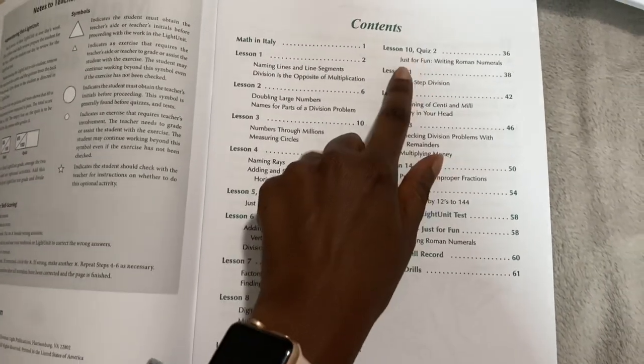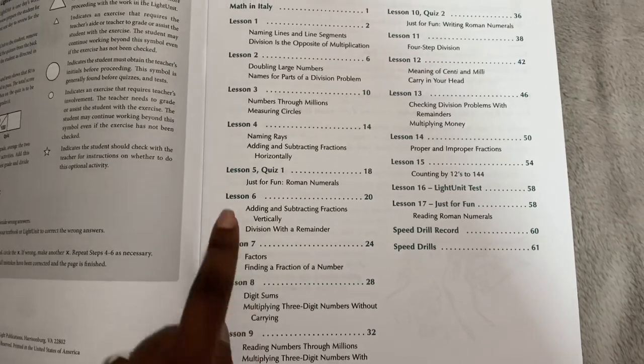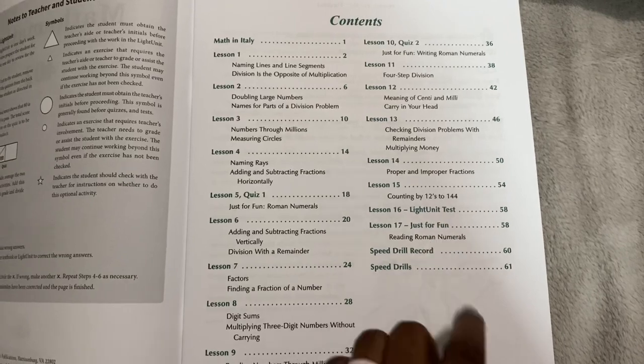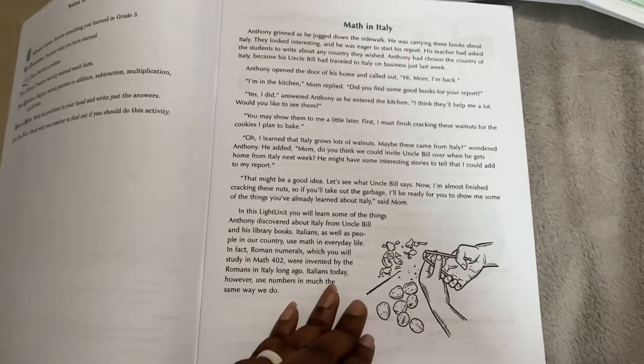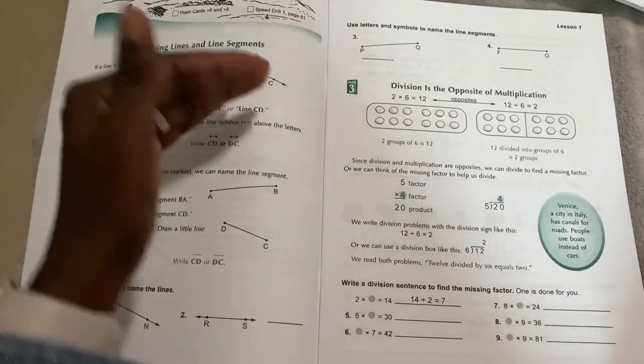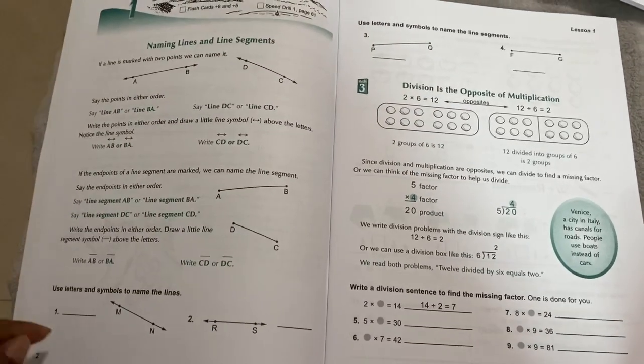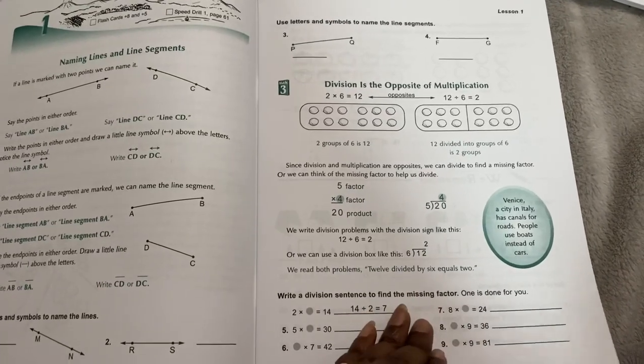So this is what they're going to be learning. Every light unit is going to begin with a little story in the front. You'll see that in every light unit. Every light unit will have two quizzes that they do at some point, and it lets them know when to do the quizzes, and every light unit will have the tests and speed drills. So this is the story. And so you begin with the lesson. It teaches them the lesson.